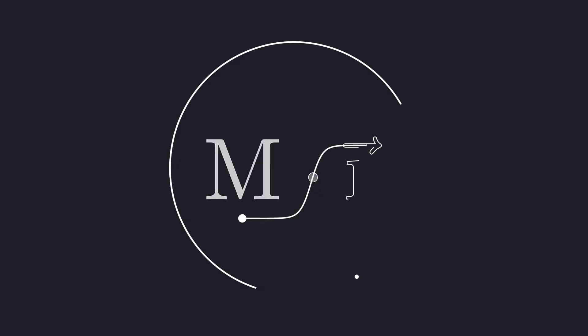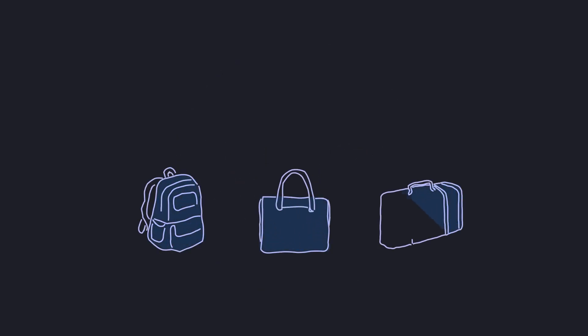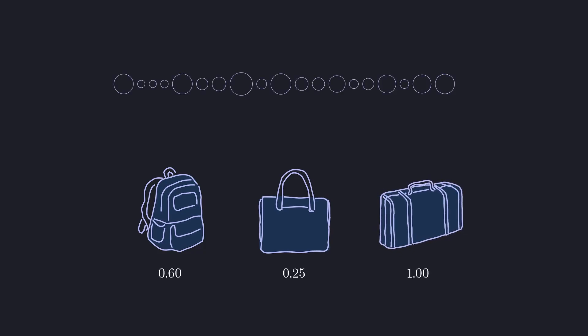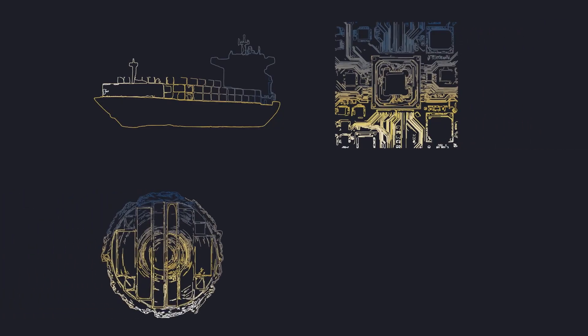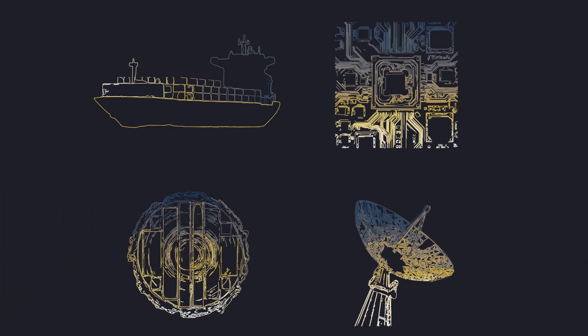Bin packing is a difficult combinatorial problem. Essentially you have a number of boxes that you need to fit inside a number of containers. Some examples in everyday life are storing items efficiently in a fridge or packing your bags efficiently for a trip. Industrially it shows up in many different areas such as logistics, processor utilization, material cutting, and telecom, to name a few.